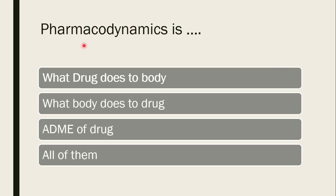Next question: pharmacodynamics is — what drug does to body, what body does to drug, ADME of drug, or all of them? The correct answer is what drug does to body. That means when a patient takes a drug, it will produce pharmacological actions and effects which can be beneficial or harmful. So pharmacodynamics deals with the drug's effect on the body.